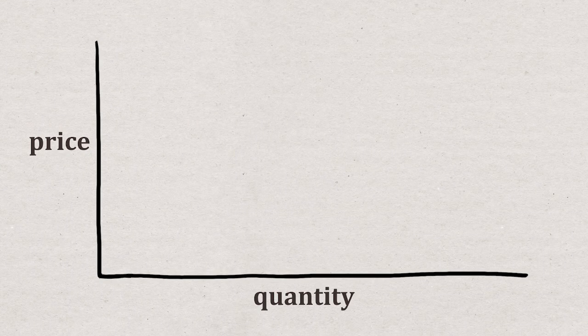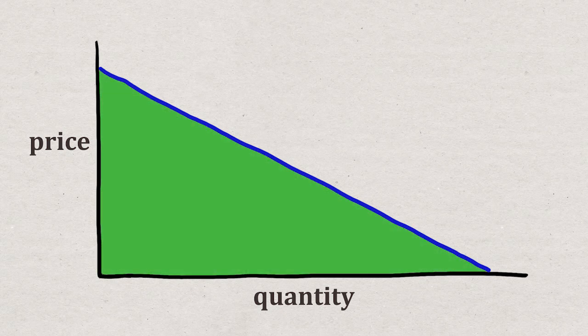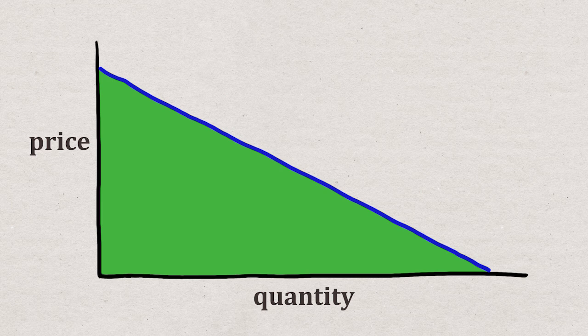Everyone has a different willingness to pay and people are generally willing to pay less to get another of something. Their collective demand function will look something like this. Their collective willingness to pay is this area. This is the value the consumers get from the resource.